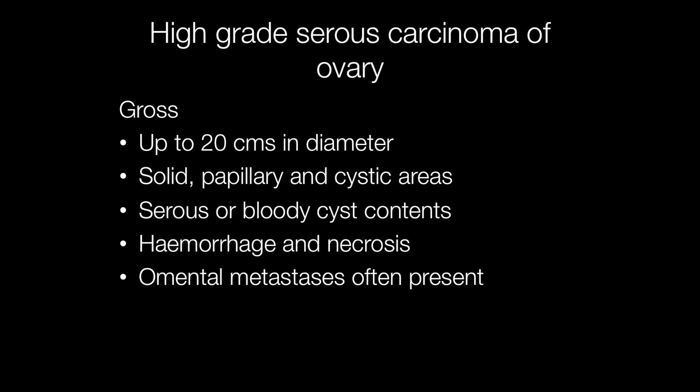Grossly, high-grade serous carcinomas of the ovary may range from as little as a few millimetres across to up to around 20 centimetres in diameter. They are typically solid with papillary and cystic areas. The cysts contain serous or bloody fluid, and there are areas of haemorrhage and necrosis. Omental metastases are often present.